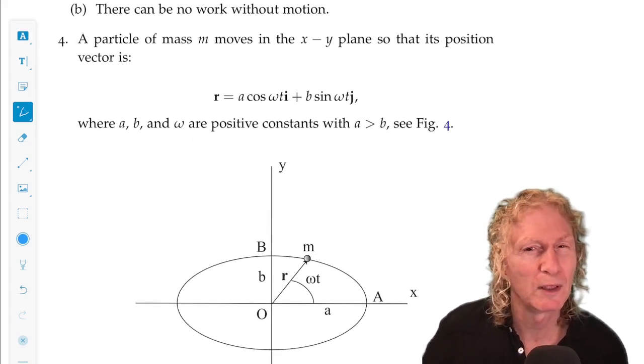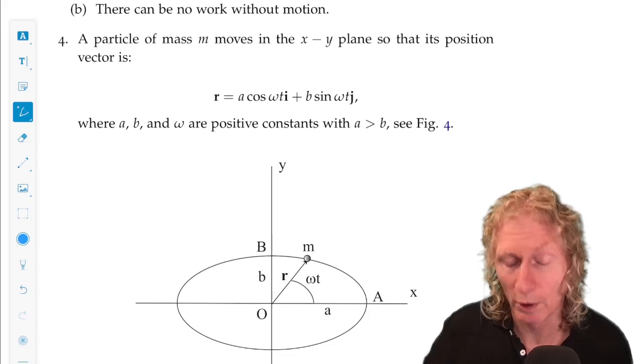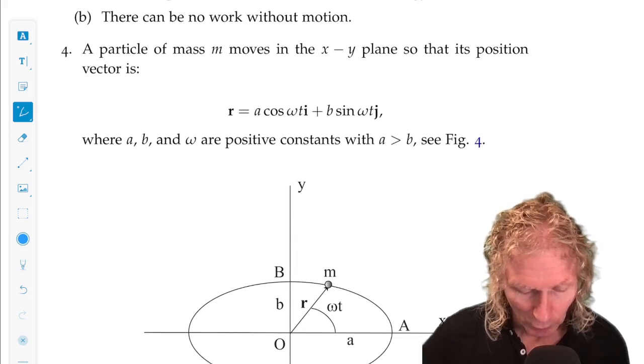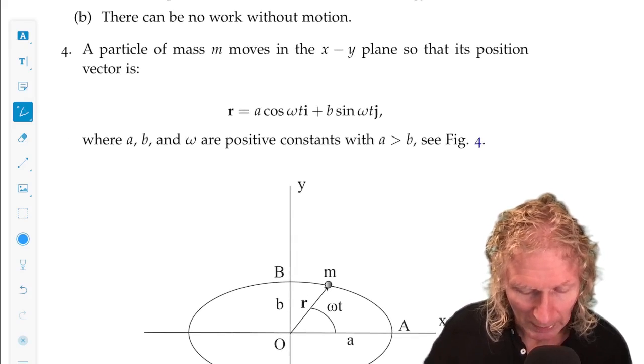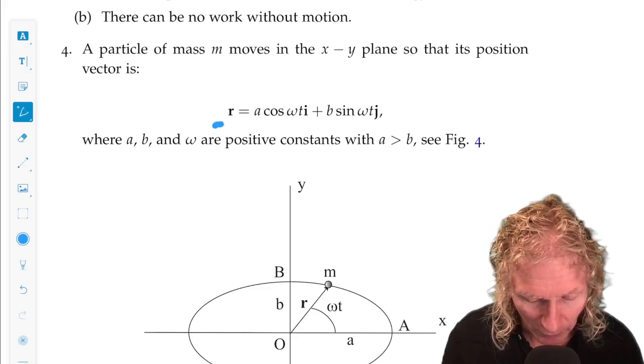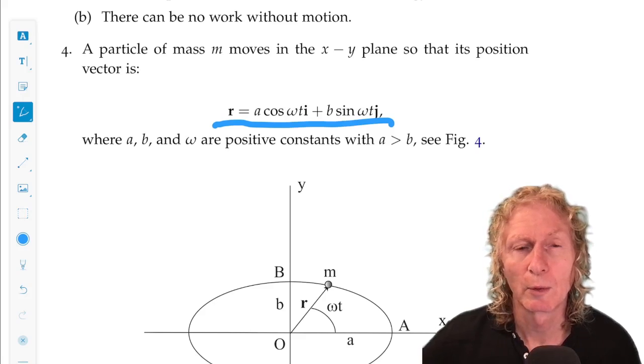Four is a problem where you've seen bits and pieces of it already, and now we're going to build in the notion of work, kinetic energy and potential energy. A particle of mass m moves in the xy plane in a way so that its position vector is given by this expression.